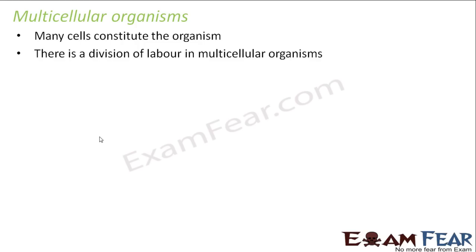What do we mean by division of labor? The work is divided between different cells. For example, suppose you have to construct a house and you have 10 laborers. You ask 2 of them to get water, 2 to carry the cement, and another 2 to start digging the ground. So many different types of work happen simultaneously.